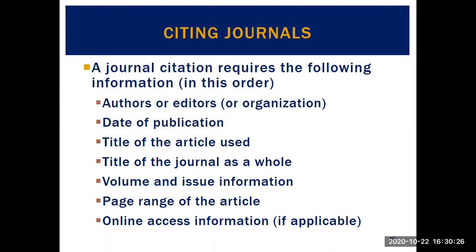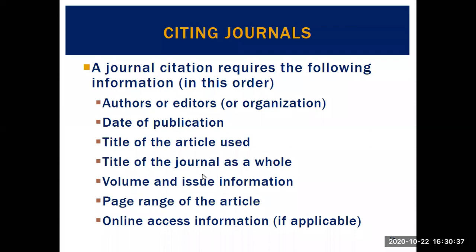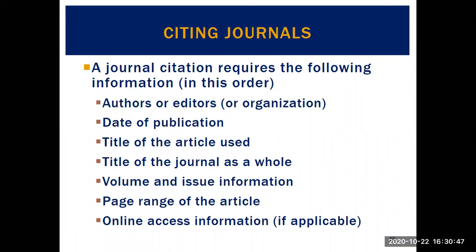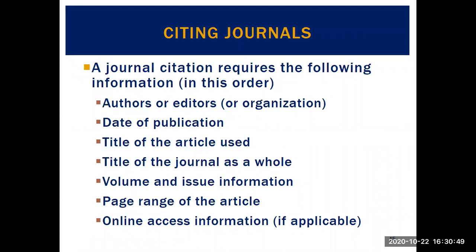When citing journals, it's similar. In this order, you want your authors, editors, or organization; the date of publication; the title of the article; the title of the journal; the volume and issue information; the page range of the article; and if you found it online, the access information.